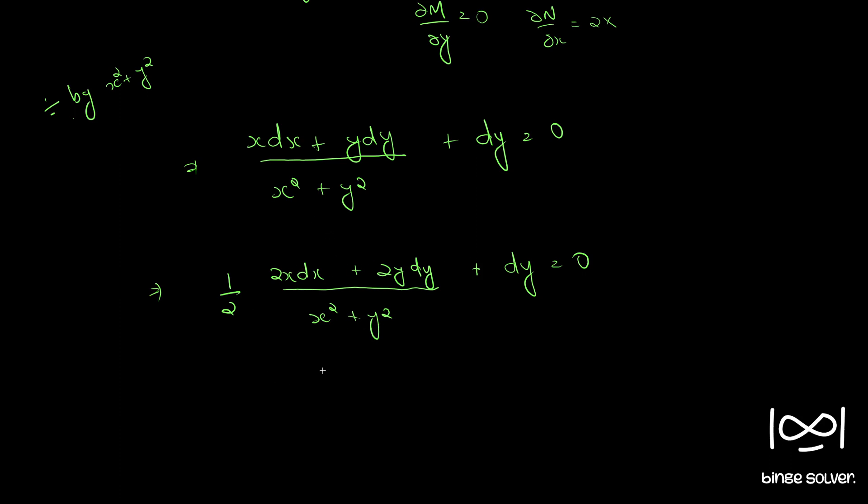So, if you integrate it directly, we can write this as, you can integrate it and write directly as, half log (x square plus y square) plus integral dy becomes y equal to a constant.